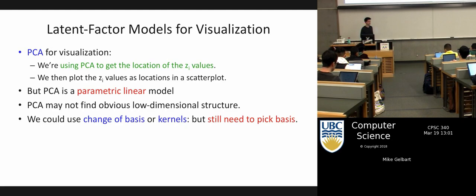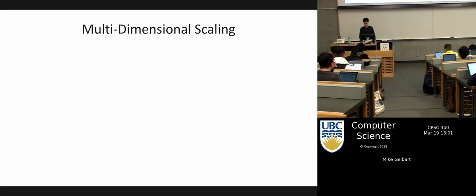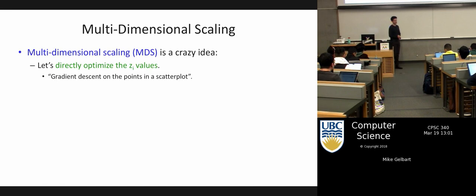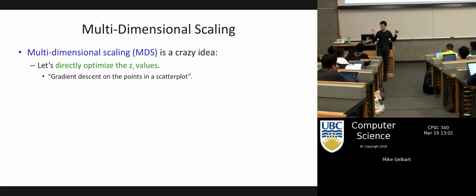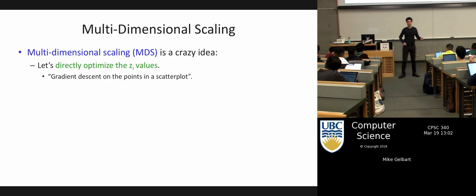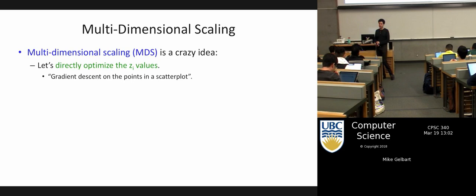Dimensionality reduction refers to starting in some higher dimension D and reducing to some lower dimension K. Here's what MDS is: instead of having a W, let's just directly optimize the scatterplot. We just have our Z matrix — N by K — and we come up with some loss function that tells us how good our scatterplot is, and then optimize that.